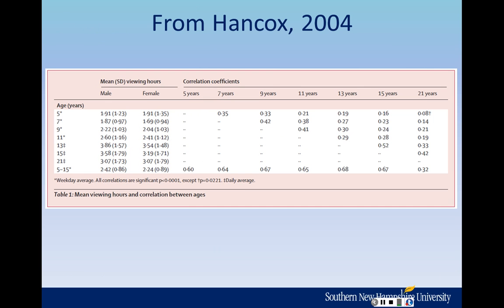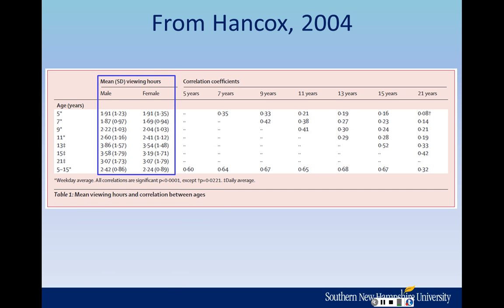The next article is from Hancocks, also published in 2004. In this study — a unique one — they were looking at television viewing and how youth and childhood TV viewing compared to young adult health outcomes. This is Table 1, and you can see the title: 'Mean Viewing Hours and Correlation Between Ages.' The left-hand part of the table gives you mean television viewing hours — the mean hours of TV viewing and its standard deviation in parentheses — for each age listed on the left: 5 years, 7, 9, 11, etc.